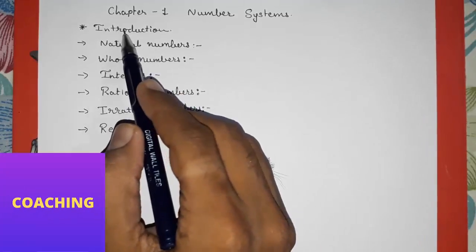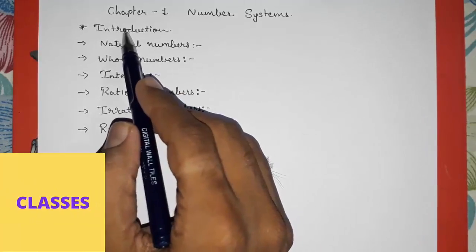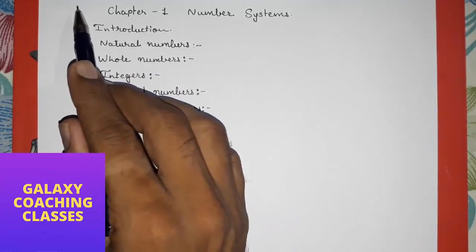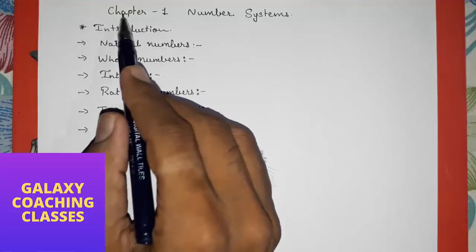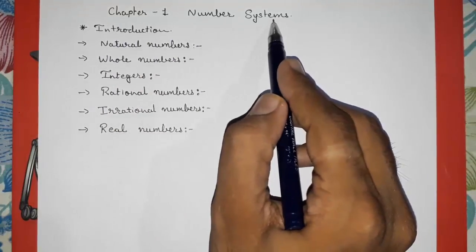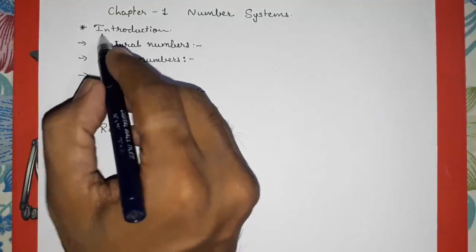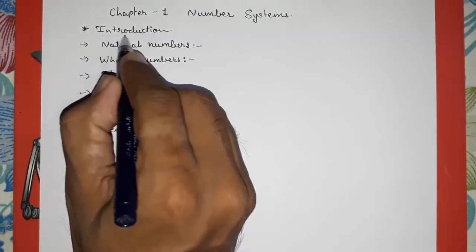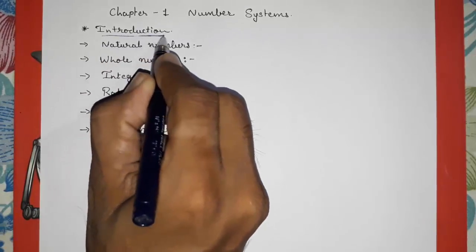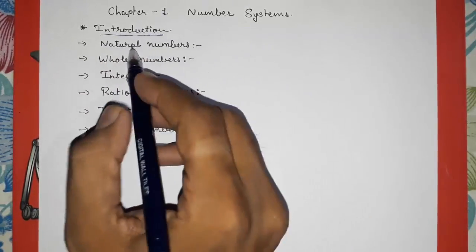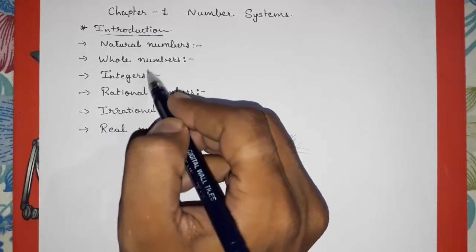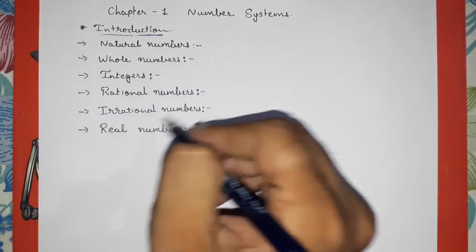Hello friends, today we are going to study CBSE class 9th chapter number 1: Number System. Before starting this chapter, you should know about natural numbers, whole numbers, integers, and other numbers that you learned in previous standards.